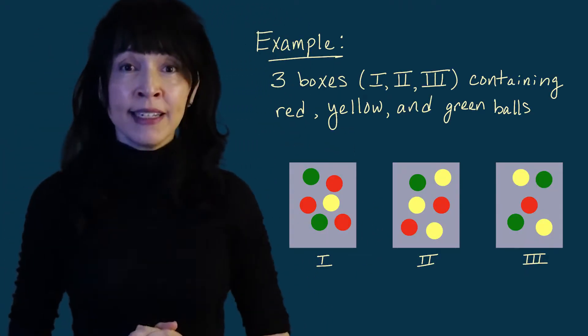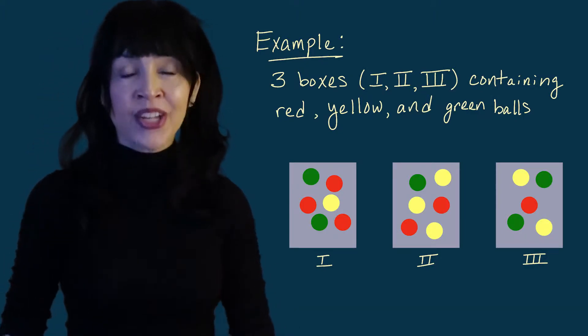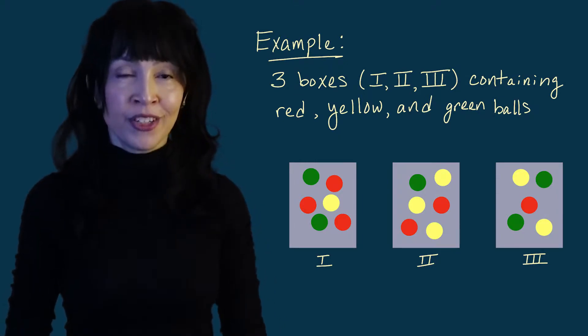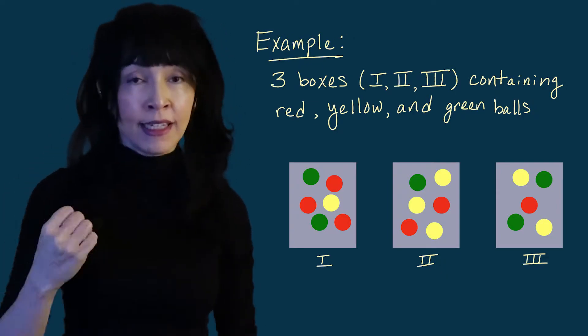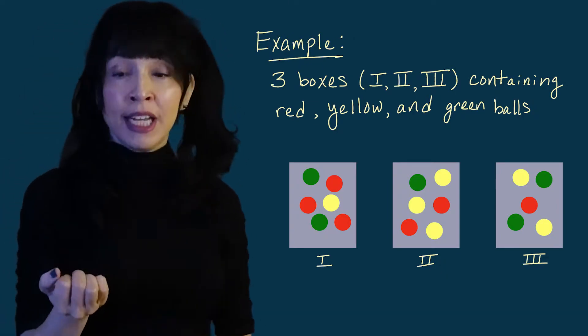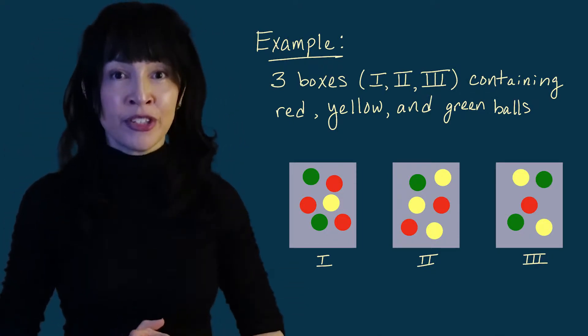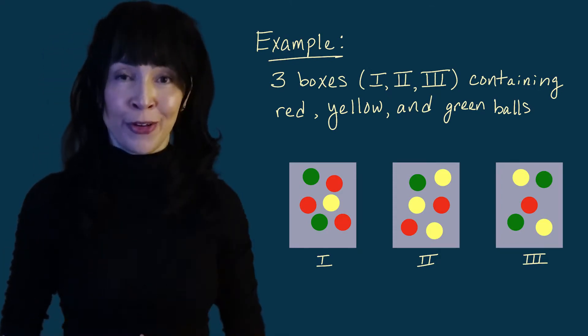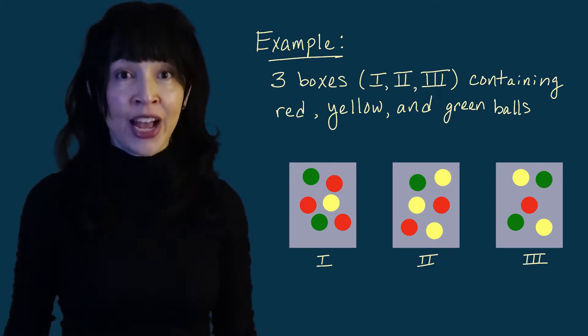I'm going to jump right in with an example. I have three boxes labeled one, two, and three, and each box contains some number of red balls, some number of green balls, and some number of yellow balls. If I were, for example, to look at box one and go in there and randomly select a ball, the probability it would be green would be two out of six because there's a total of six balls there and two of them are green. So that probability would be two-sixths or one-third.